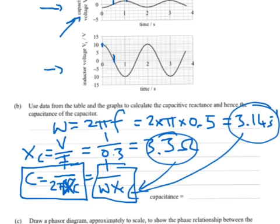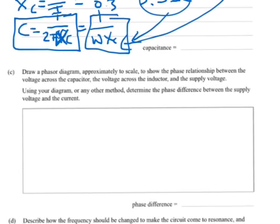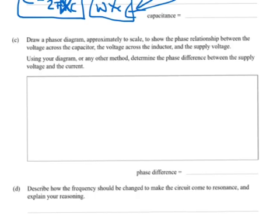Substitute that and that into this and you get the capacitance. C: draw a phasor diagram approximately to scale to show the phase relationship between the voltage across the capacitor, voltage across the inductor, and the supply voltage. Using a diagram or any other method to determine the phase difference between the supply voltage and the current.